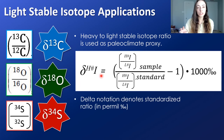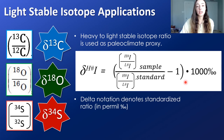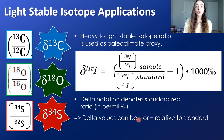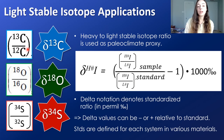We use what's called delta notation to get reliable isotopic compositions. We standardize the isotope ratio by comparing it to a known standard, so we can use consistent notation and compare values meaningfully. Because of this standardization, values can be negative or positive relative to the standard. Positive values are heavier — enriched in the heavy isotope. Negative values are lighter — depleted in the heavy isotope.